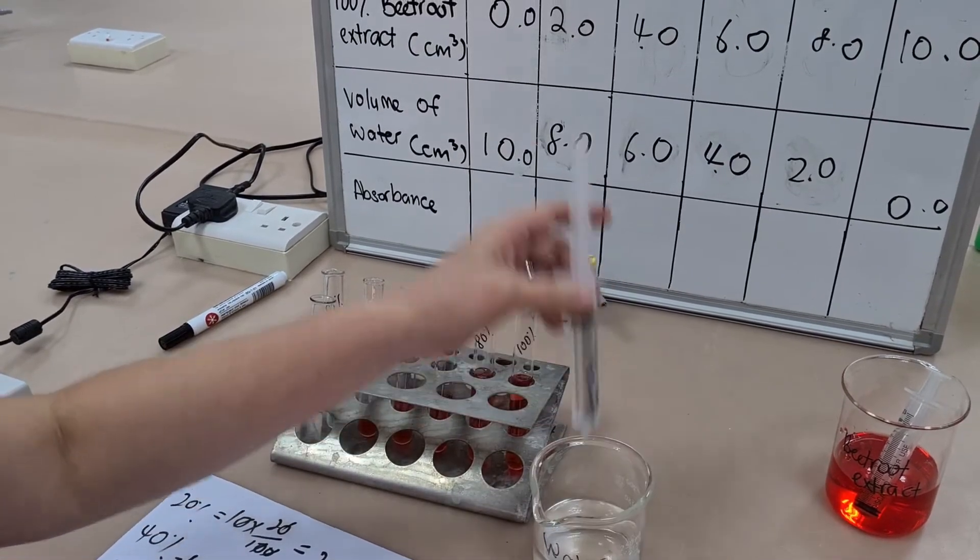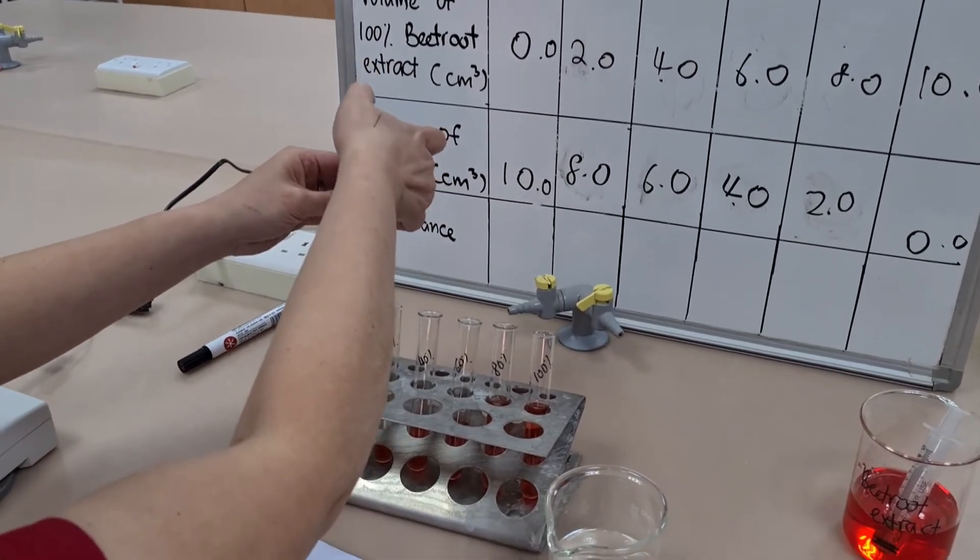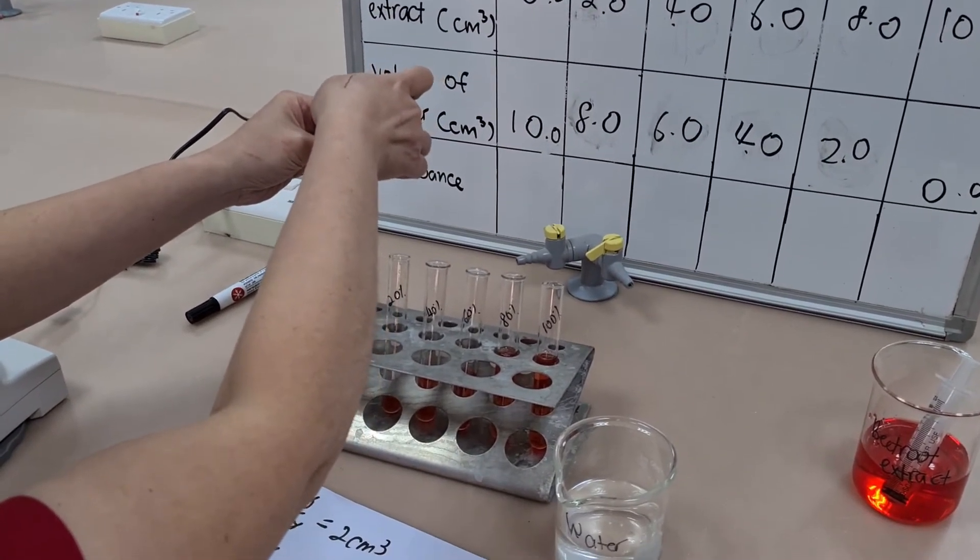Equally, to make a 40 percent solution, I'm going to use four mils of my beetroot extract and six mils of water and so on.